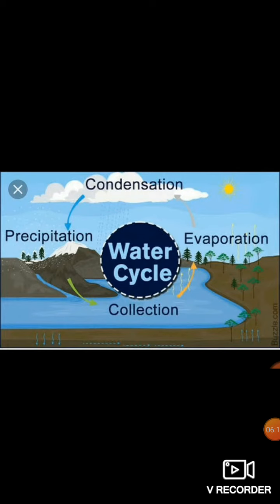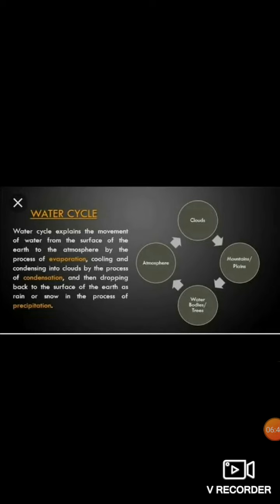In nature, water keeps changing its form again and again. This forms clouds and results in rain. Seas, rivers, and lakes are the main sources of water. When the water in these bodies is heated by the sun's rays, it changes into water vapor, which rises up. As the upper layers of air are cooler, the vapor condenses into small droplets that float in the air and form clouds. When these droplets get further cooled and become heavy, they fall back as precipitation — in the form of rain. This cycle is called the water cycle.